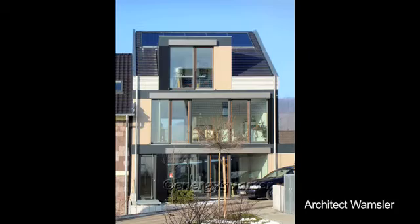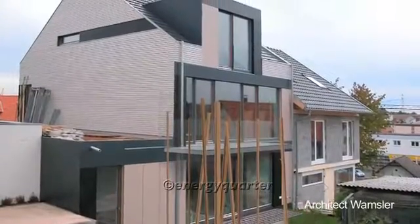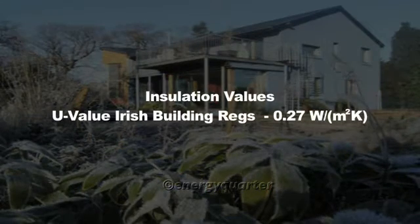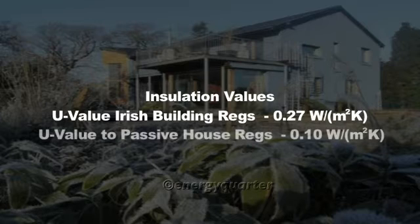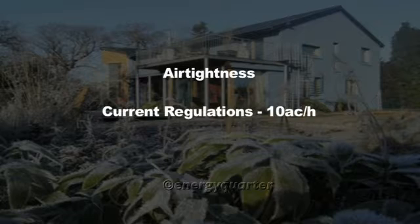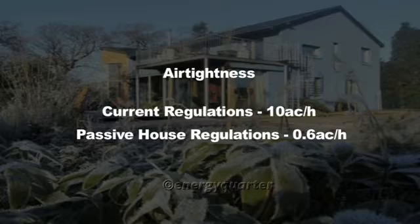The passive house standard was defined 20 years ago, and the standards defined back then for insulation and air tightness still greatly exceed current building norms. For example, the current EU U-value required by Irish building regulations is around 0.27 W/m·K, whereas in this series we'll be seeing walls with a U-value of 0.10 — two and a half times better. In terms of air tightness, current building regulations require about 10 air changes per hour, whereas the passive house standard requires 0.6 air changes per hour.